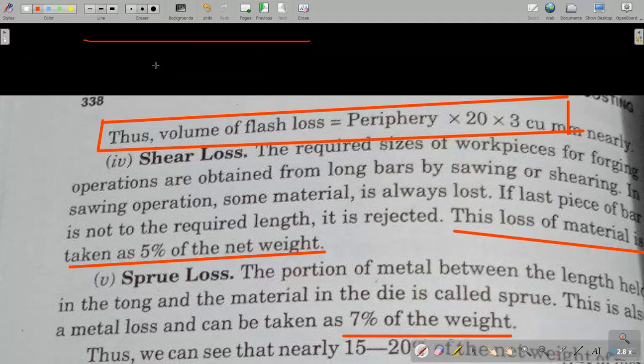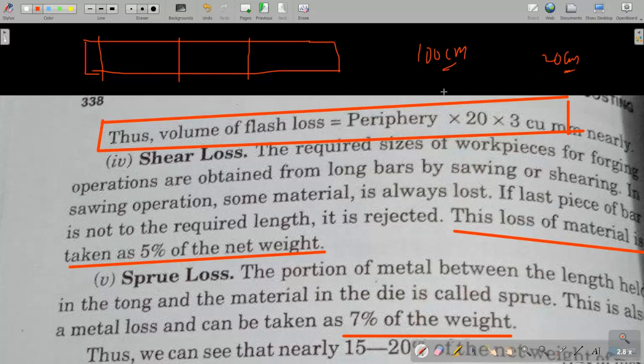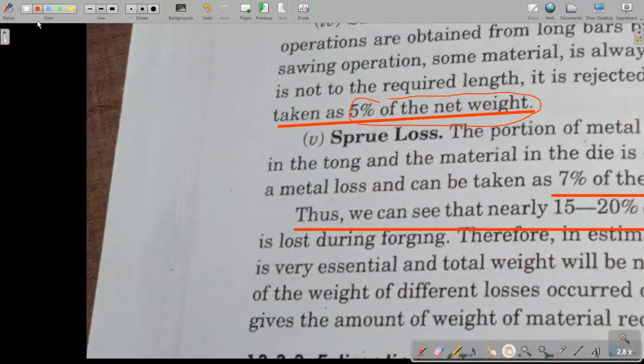Generally there is one long bar or raw material like ingot. So generally what we are doing is we are cutting some length. So there is some losses also. We are cutting again and again and it is not exactly the size that we take it out. Like we have 100 centimeter length of ingot and we require 20, 20 centimeters. So that is not possible in each and every case. So there is some portion that is not useful anymore. So that is also lost. So that we are taking 5% of the net weight.